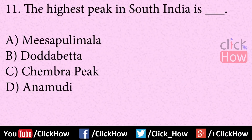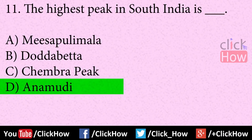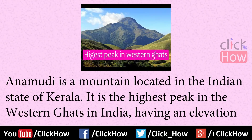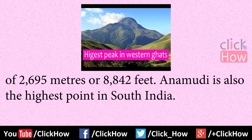Question number 11: The highest peak in South India is? Answer is option D, Anamudi. Anamudi is a mountain located in the Indian state of Kerala. It is the highest peak in the Western Ghats in India, having an elevation of 2,695 meters or 8,842 feet. Anamudi is also the highest point in South India.